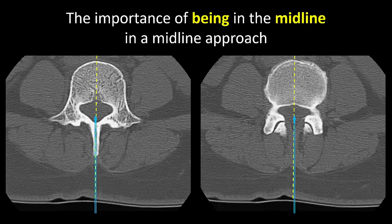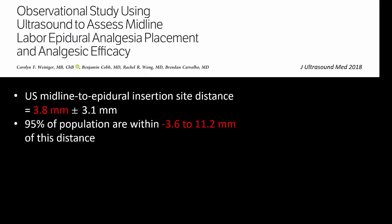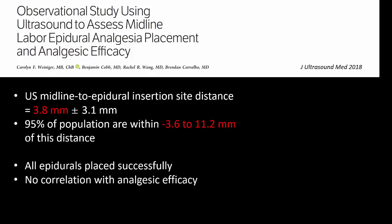It goes without saying that a successful midline approach involves inserting the needle in the neuraxial midline. The problem is that the true neuraxial midline is not always accurately located by palpation alone, and we are often not placing our needle in the midline. This is illustrated in a study which looked at whether placing an epidural off the true midline affected the efficacy of labor epidural analgesia. The average distance of the epidural puncture site from the true midline, as assessed by ultrasound, was almost four millimeters. All epidurals were successfully placed and there was no correlation of this distance with efficacy.